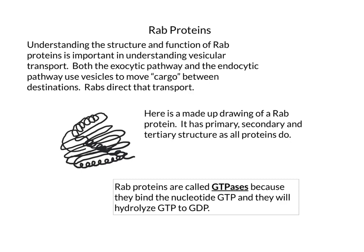Hello. I'm going to give this brief tutorial just to give everybody a better understanding of what RAB proteins do. RABs are proteins important for the delivery of cargo between destinations in cells. They are part of the vesicular transport system and function on both the endocytic and the exocytic pathway.